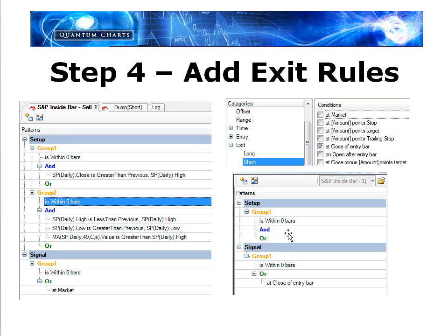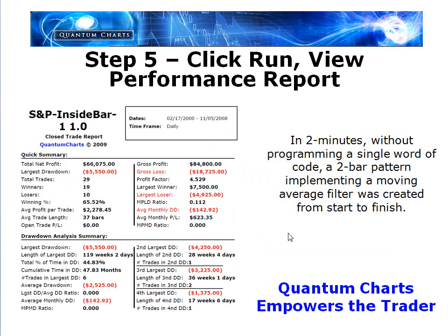Step 5: once I put an exit rule on there, I click on the performance report and instantly I'm given a trade performance report. This example is based on February 2000 through November 2008 — a sample of data that goes back all the way to 1982. Total net profit: $66,000. The winning percentage held up at 65%. The drawdown was only $5,500 trading one full S&P contract. Very, very powerful information — from beginning to finish in two minutes without programming a single word, I created a two bar pattern with a moving average filter and generated the performance stats.